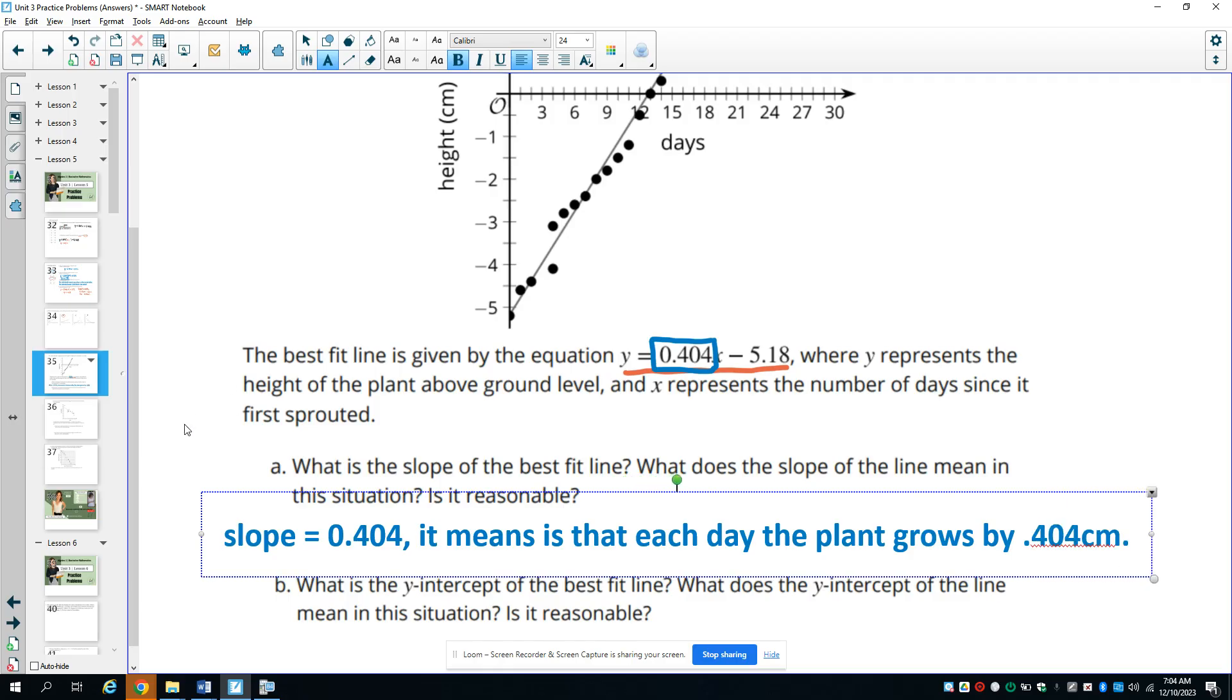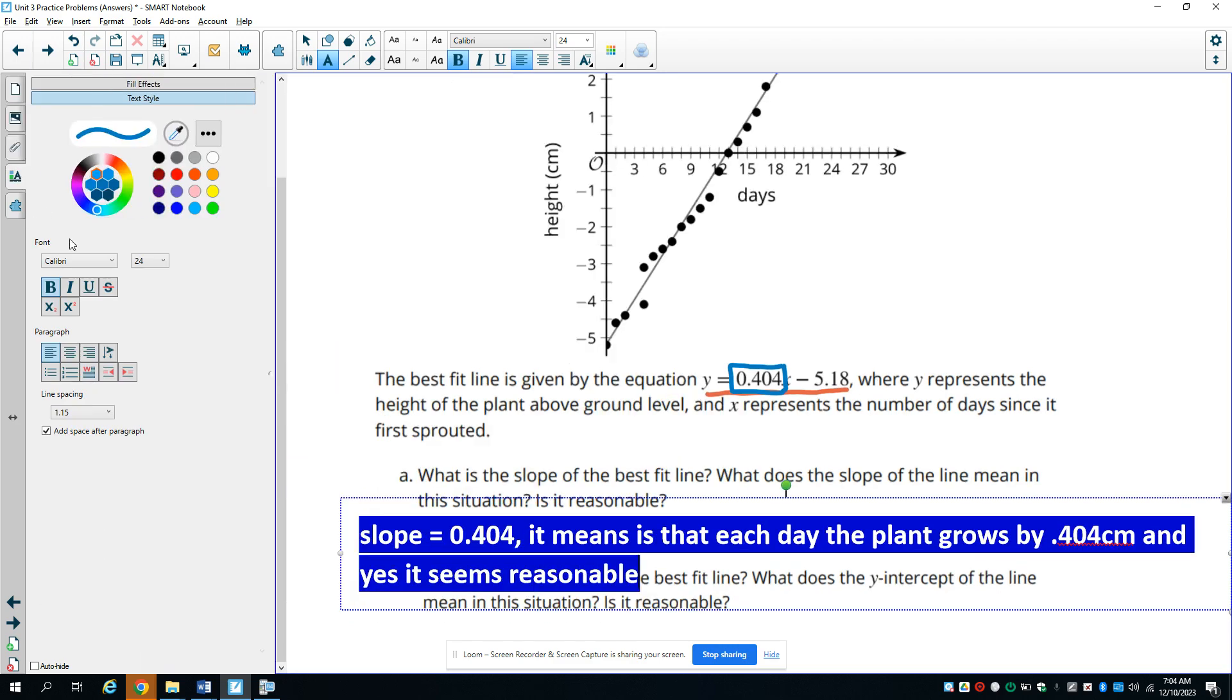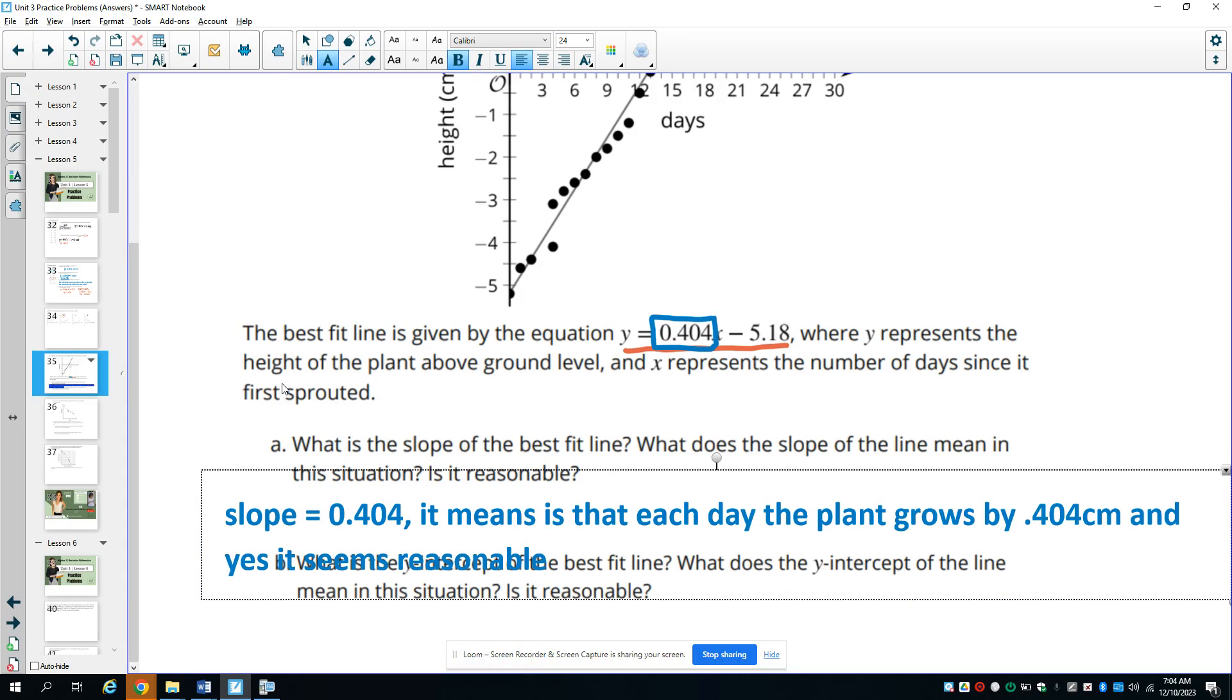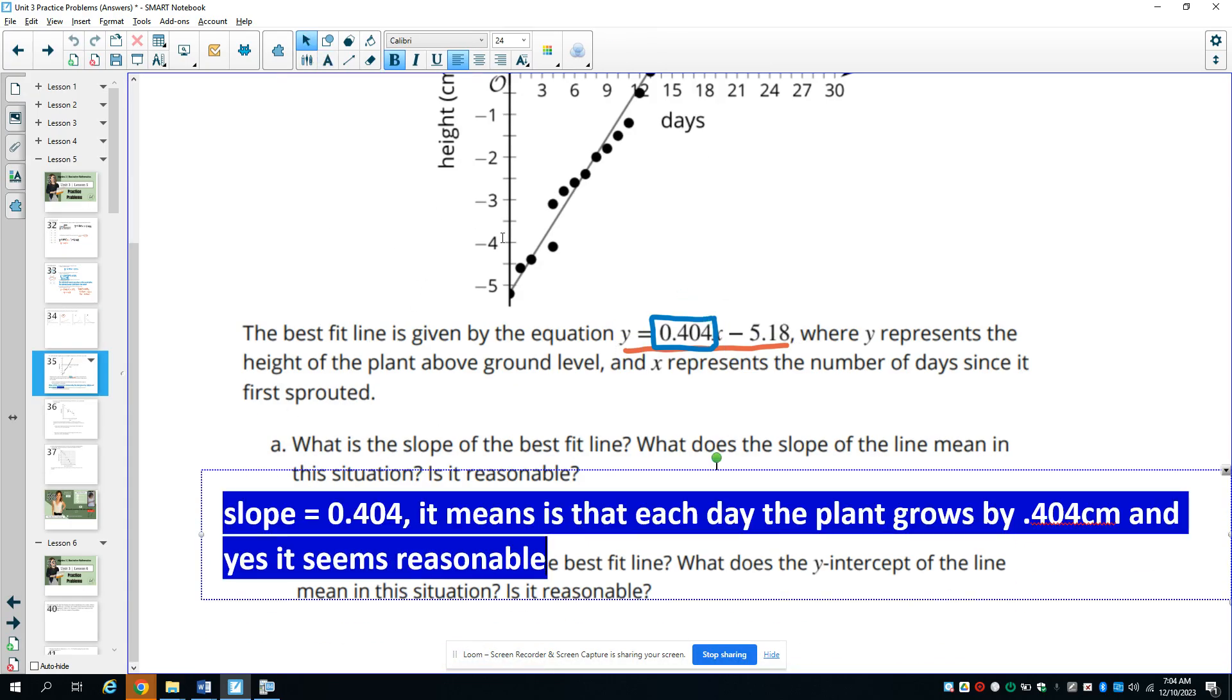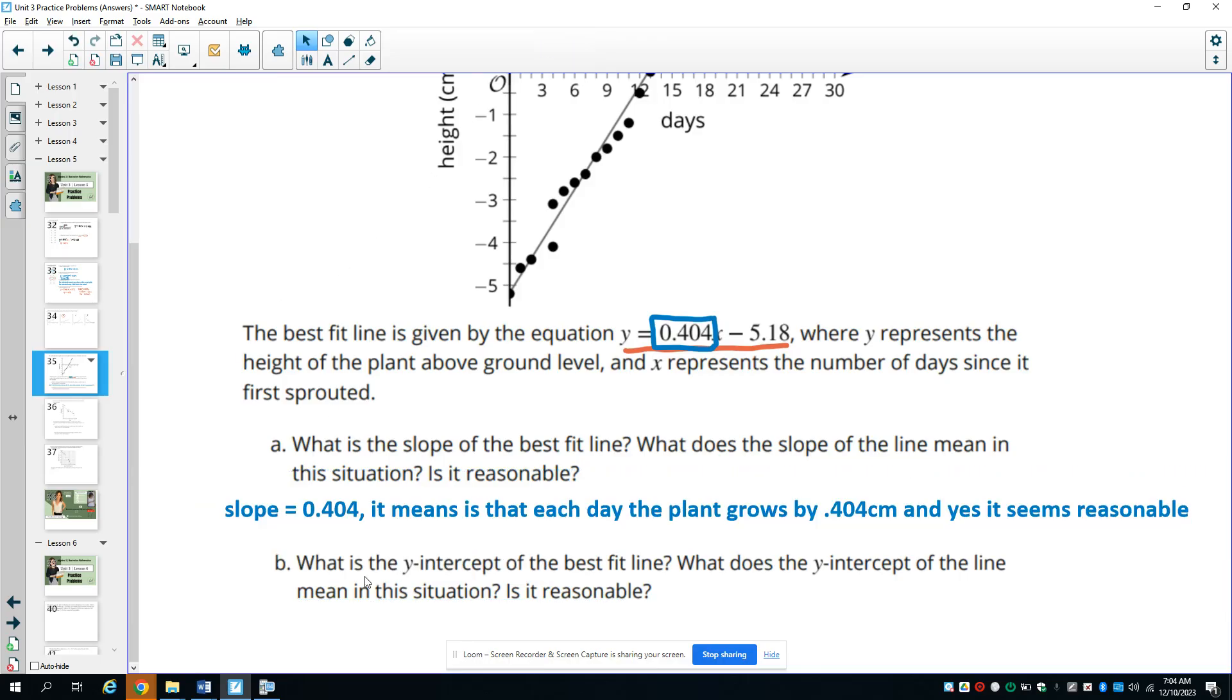And is that reasonable? Yeah, that seems reasonable. So it seems reasonable that the plant would be able to grow 0.4 centimeters per day. So let me get this so that we can read it.